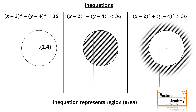There are two types of areas — one is inside the circle and one is outside the circle. The area inside the circle is a finite region, it has boundaries, so we call it a bounded region or finite region. Whereas in the second inequation, the area is infinite, so that is called an unbounded region — it does not have any boundaries. The concept of inequation is that it represents a region.